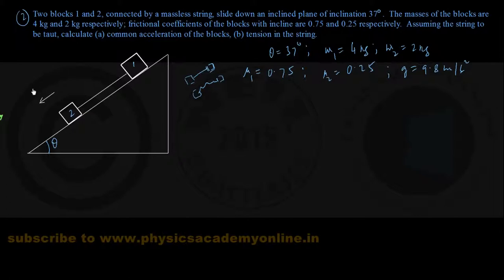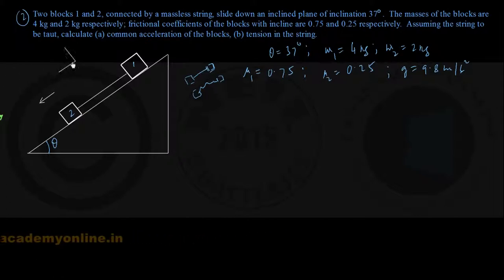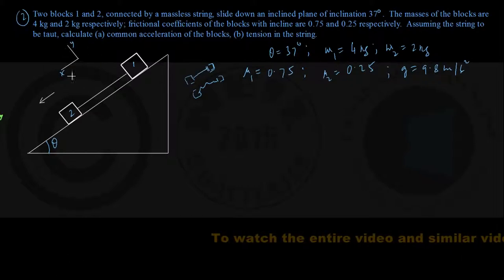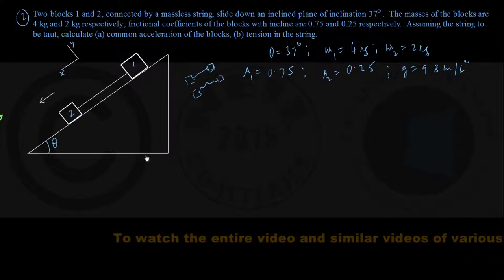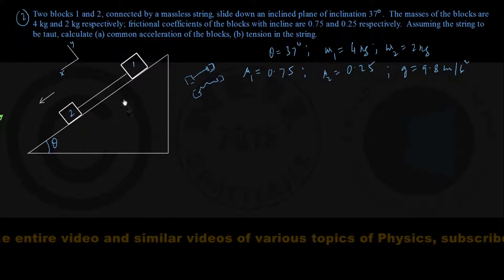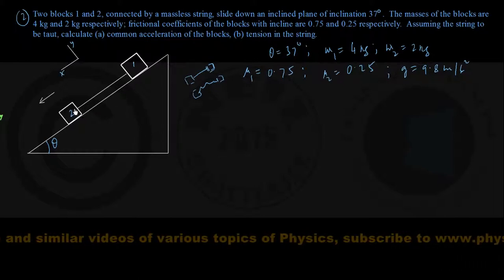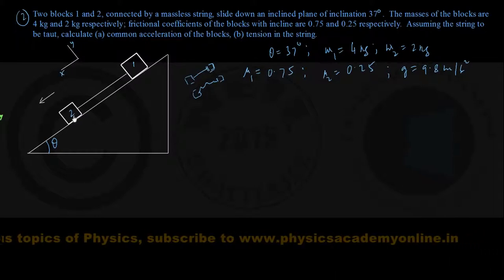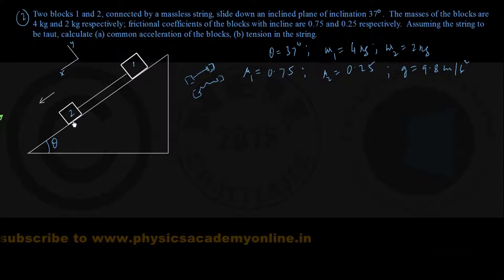I shall choose a coordinate system convenient for me: the direction down the incline is my plus-x direction, and the direction perpendicular to the incline is my plus-y direction. The motion takes place in a vertical plane. To solve this question, let us first look at the figure and identify the forces on the blocks before drawing the FBDs separately.